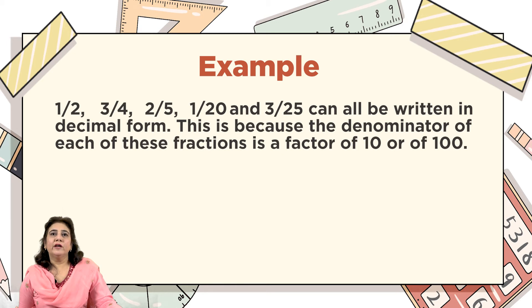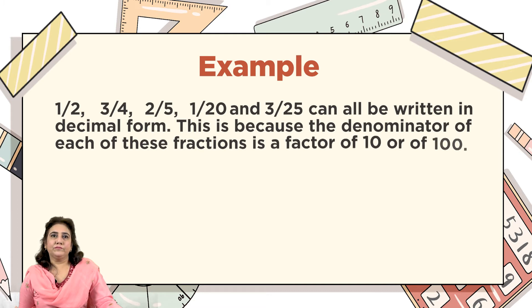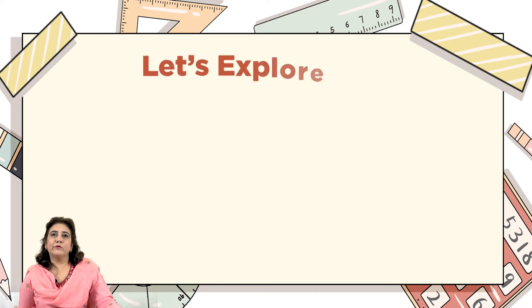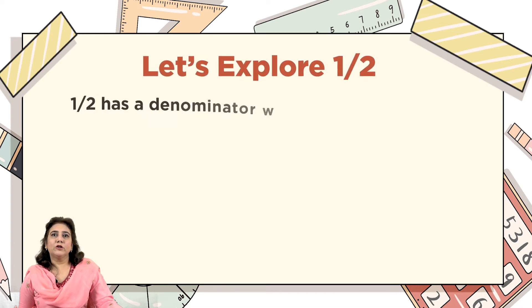For example, 1/2, 3/4, 2/5, 1/20, and 3/25 can all be written in decimal form. This is because the denominator of each of these fractions is a factor of ten or of one hundred.